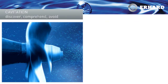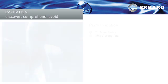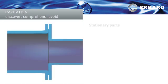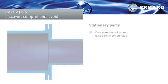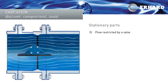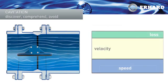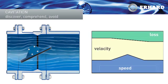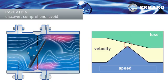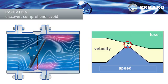Cavitation, for example, can occur in turbine blades or ship's propellers, but stationary parts are also affected by it — for example, if the cross-section of pipes is suddenly constricted or if the flow is restricted by a valve. Strong velocity conversions are generally the cause of the pressure changes which initiate cavitation.